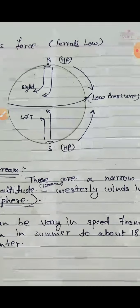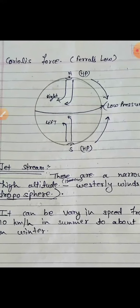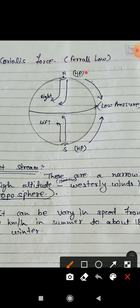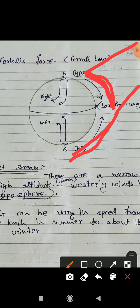Let me show you the Coriolis force diagram. This is the equator, showing low pressure on the equator. The upper air circulation involves high pressure and low pressure. The wind moves from high to low pressure. The poles are high pressure and the equator is low pressure — because the polar regions are cold and the equatorial region is very warm, causing low air pressure there.